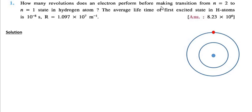How many revolutions does an electron perform before making transition from n equals 2 to n equals 1 in hydrogen atom? The average lifetime it is given to us.